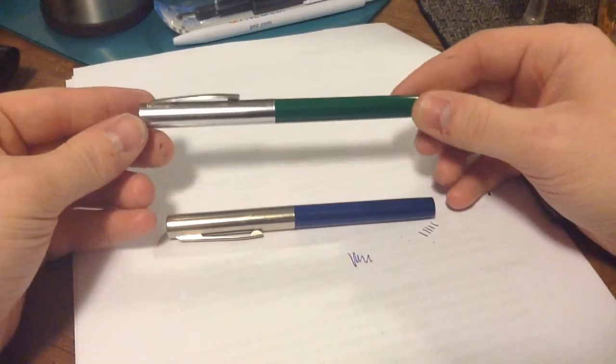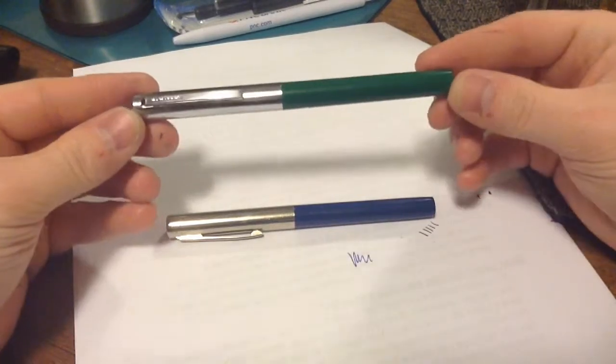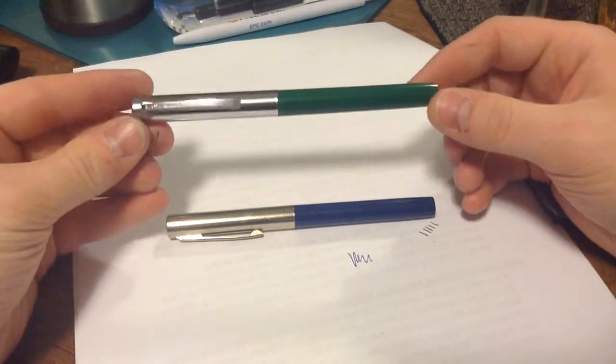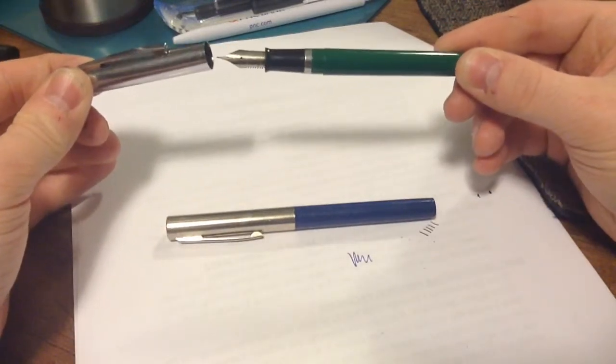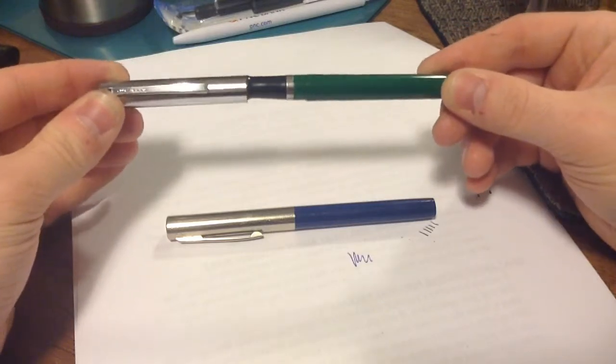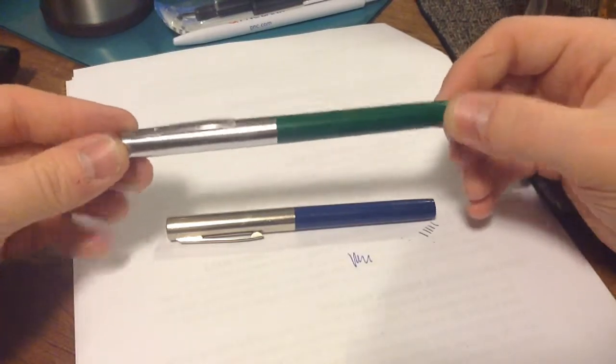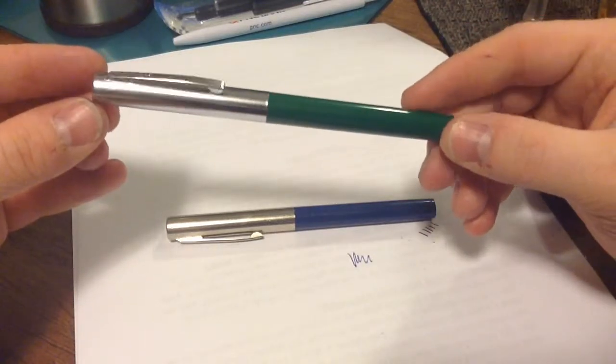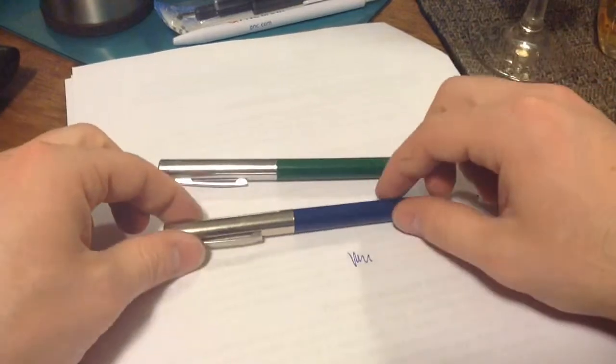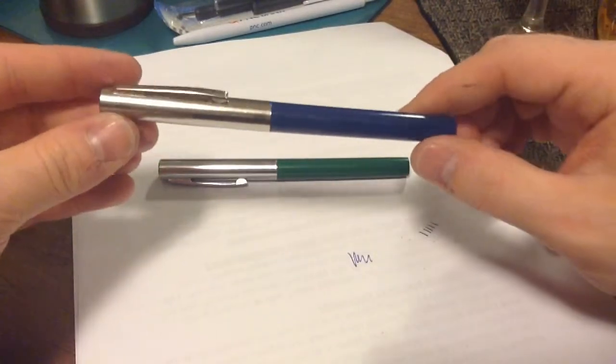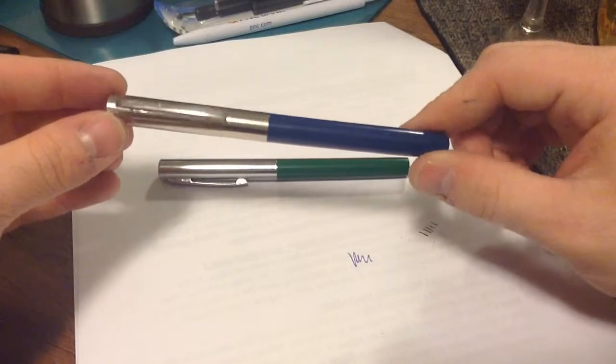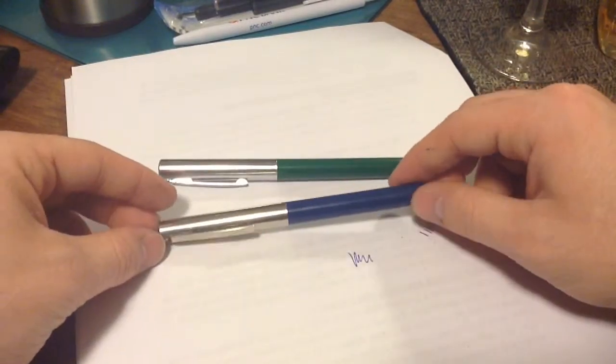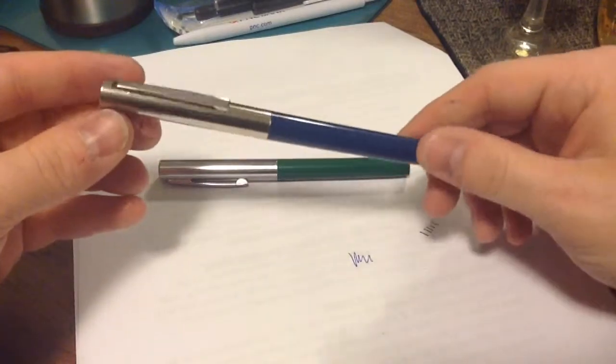But let me tell you, if you can find these, do yourself a favor and grab them because they are just an awesome, in most cases an inexpensive fountain pen, even though they're a vintage fountain pen. I bought two of these green ones about a week ago and they cost me $4 a piece. And then I bought this blue one for I want to say it was about $7 to $8. So it just depends on where you find them and where you go.